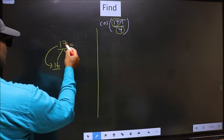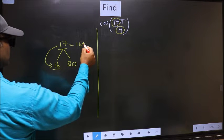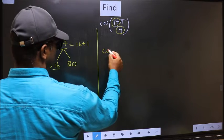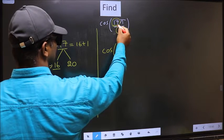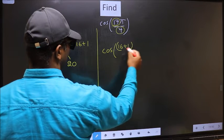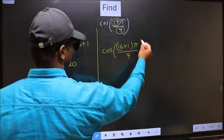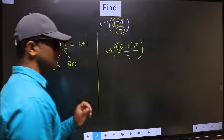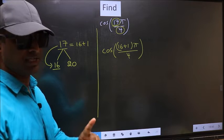So 17 should be written as 16 plus 1. So this will become cos. In place of 17, now you write 16 plus 1, pi by 4. This is your step 1.